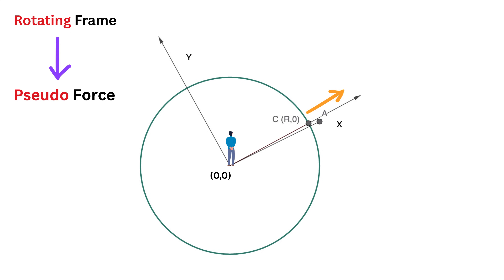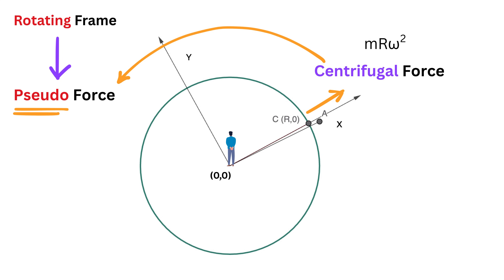To explain this, we introduce fictitious forces in the rotating frame — forces that are not real but must be added to make Newton's law work. Since the person is moving outward in this rotating frame, we say a centrifugal force is acting on them, pointing away from the center. Its magnitude is m·r·ω², where m is the mass of the person. This force is not real; it is only needed to make the person's apparent outward motion make sense in the rotating frame.